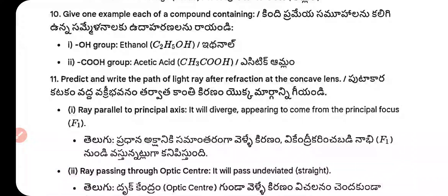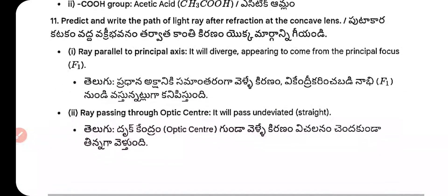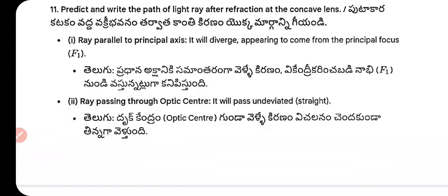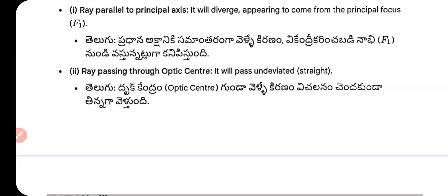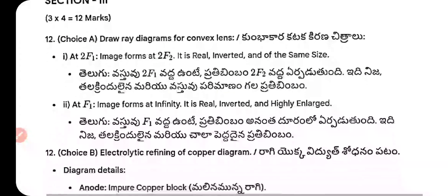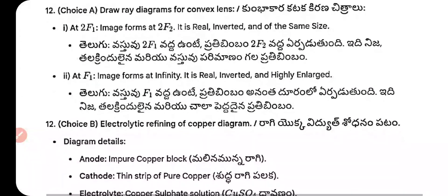Question 11 — Path of light ray after refraction at a concave lens: a ray parallel to the principal axis will diverge, appearing to come from the principal focus F₁. A ray passing through the optic center will pass undeviated in a straight path.